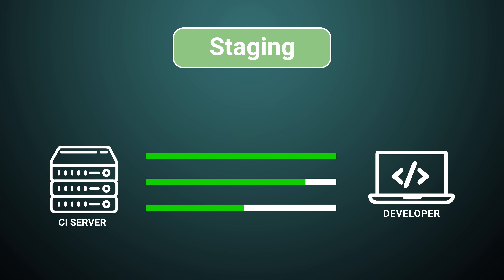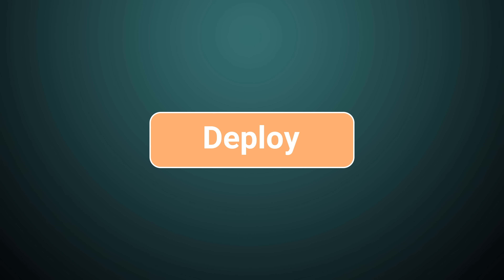If the software passes all of the tests in the staging environment, it's automatically deployed to the production environment. Continuous deployment is much more advanced than continuous delivery in that it requires a high level of trust in the automated testing and deployment process. Continuous deployment allows developers to release new features and bug fixes to production quickly, reducing the time it takes to get feedback from users and improving the overall quality of the software.